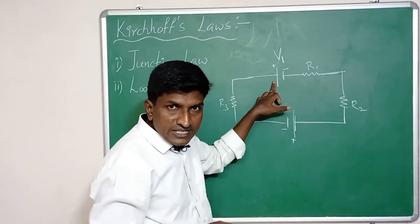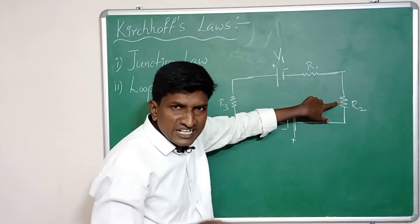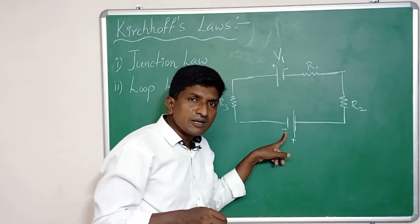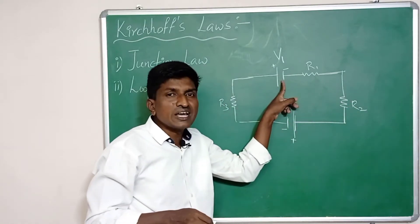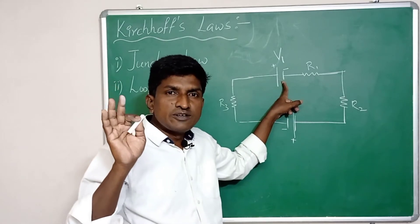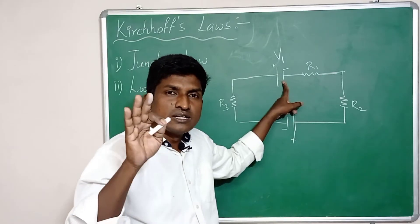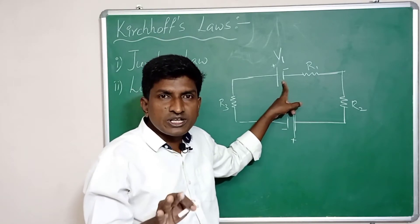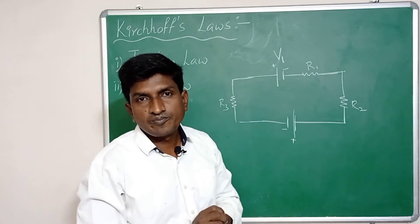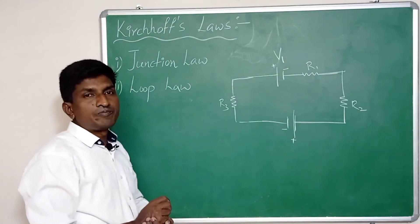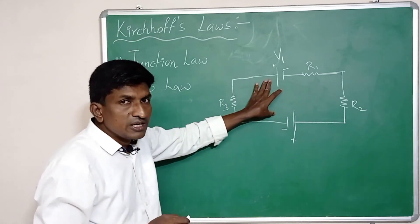The algebraic sum of increases and decreases in potential difference across various components in a closed loop must be zero. The potential difference increases across some components and decreases across others. The net change in potential difference as we return to the starting position is zero. This is the loop law.